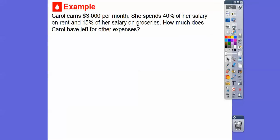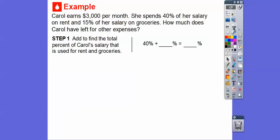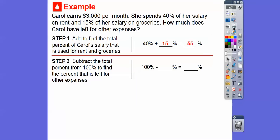Here's another example. Carol earns $3,000 per month and she spends 40% of her salary on rent and then 15% of her salary on groceries. How much does Carol have left over for other expenses? We can add to find the total percent that Carol uses for rent and groceries. 40% plus 15% means she spends 55% on the rent and groceries.